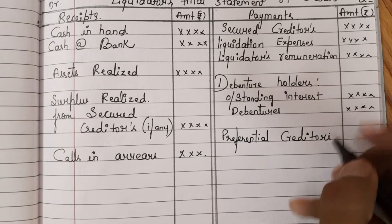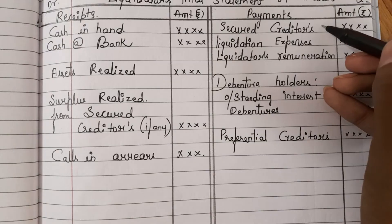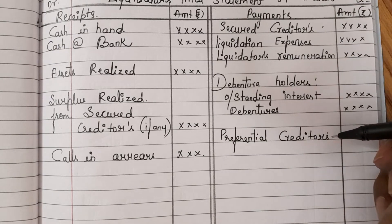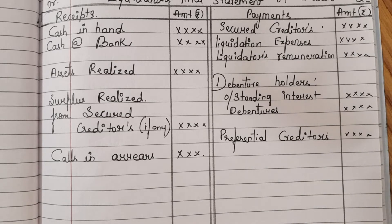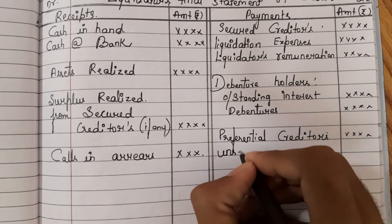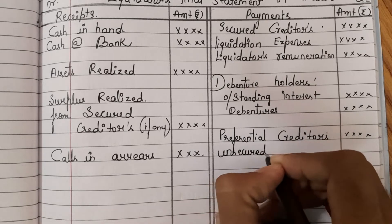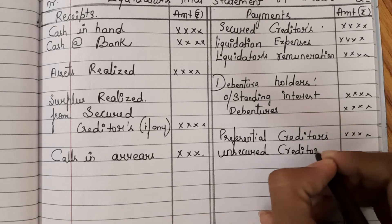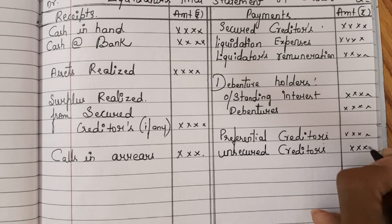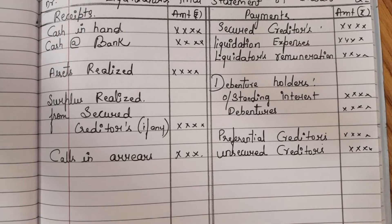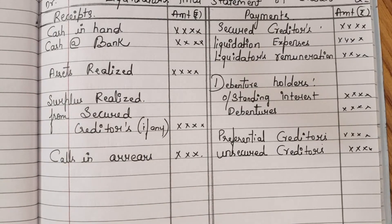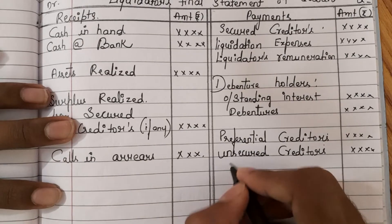Next comes preferential creditors. What is the difference between secured creditors and preferential creditors? With secured creditors you would have pledged a property or asset, but with preferential creditors you will not pledge anything — for example, taxes you need to pay to the government. Similarly, no assets are pledged there. After this come unsecured creditors. The difference between preferential creditors and unsecured creditors is that both involve no mortgage or pledge of assets, but preferential creditors have more preference than unsecured creditors.